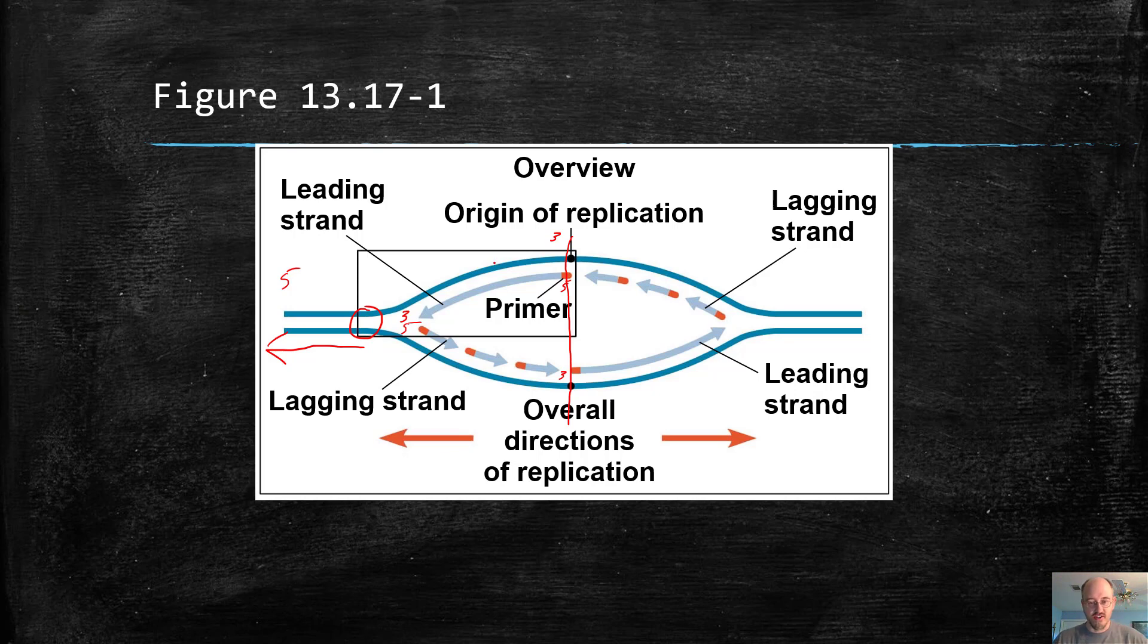So it does it in chunks. So right here is the first chunk that was made. This is the second chunk that was made. This is the third chunk that was made. As more DNA is exposed in this direction, the next fragment will be right here. And then the next fragment after that will be made up here. They'll be made later in pieces as new bits of template DNA are exposed. And then they'll all be glued together in the end.